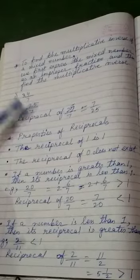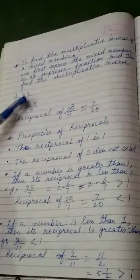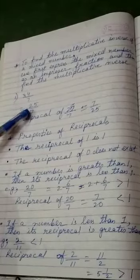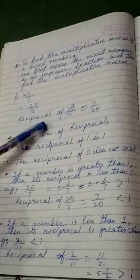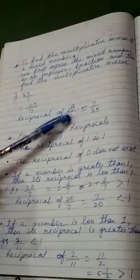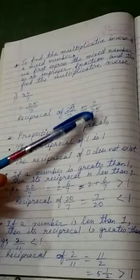Like 3 whole 4 by 7, we will convert it into 25 by 7, that is an improper fraction. And then we will find out the reciprocal of 25 by 7 as 7 by 25.